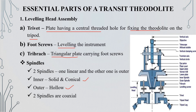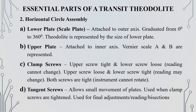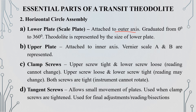The two spindles are coaxial. The second essential part of classification is the horizontal circle assembly, consisting of the lower plate, upper plate, clamp screws, and tangent screws. The lower plate is called the scale plate, to which the outer axis is attached. Graduations are marked with readings from 0 to 360 degrees.